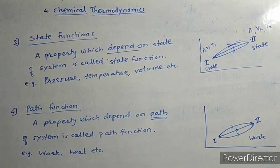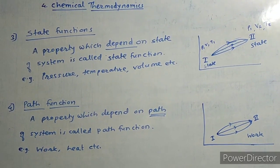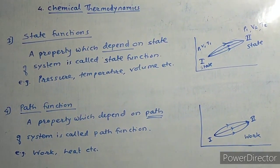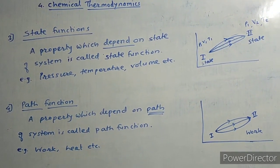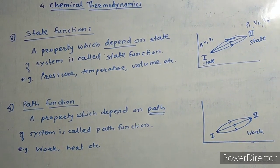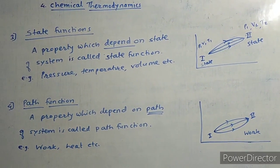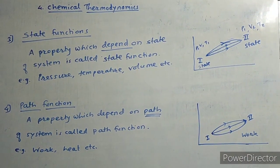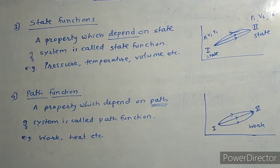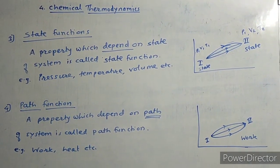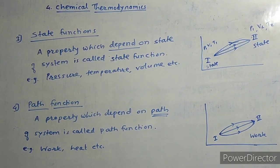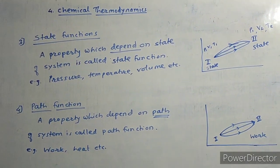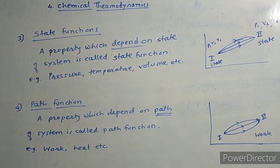Next is the state function. A property which depends on the state of the system is called the state function. Examples include pressure, temperature, and volume. In the diagram, state one has pressure P1, volume V1, and temperature T1; state two has P2, V2, and T2. As the state changes, the values of these properties change — so they are called state functions.